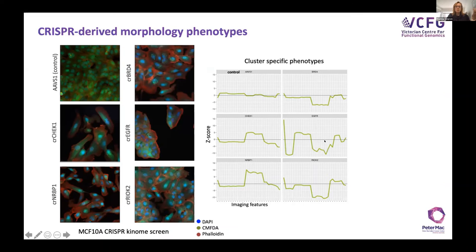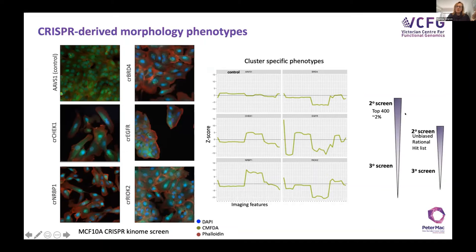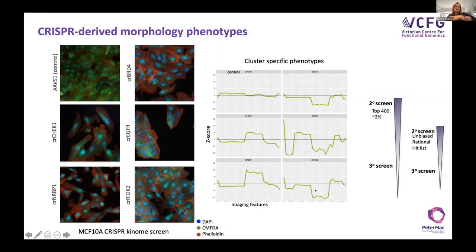These imaging features allow us into the future to say: if I only want to look at things that match a specific profile, I could have that profile defined and use machine learning approaches to only pull out those things. Rather than our top 400 or two percent, we're now able to bring our hit list down to much lower numbers — a rational hit list. Instead of sifting through 400, we could be sifting through 50.